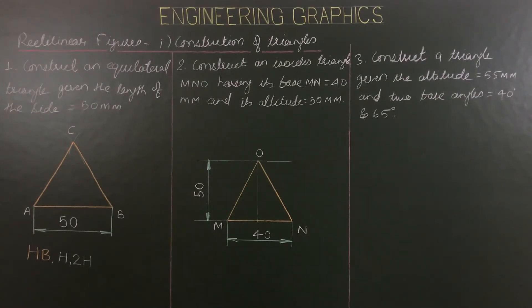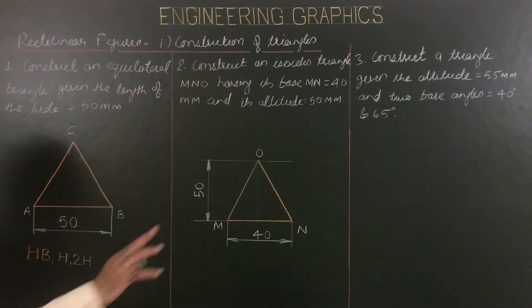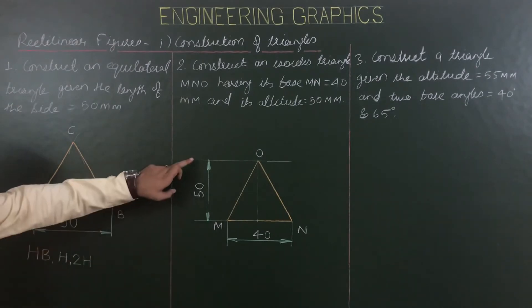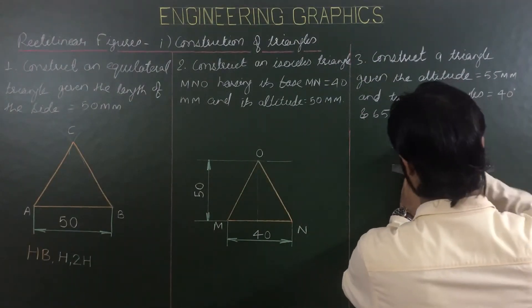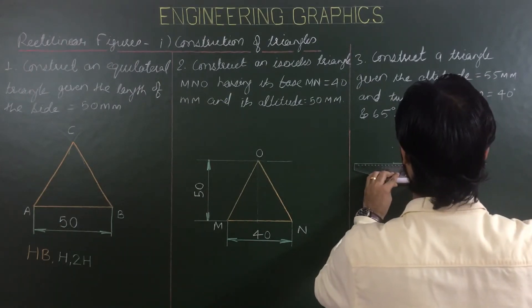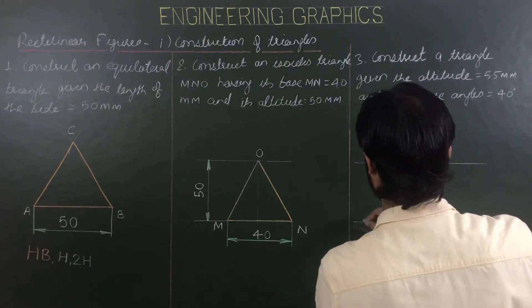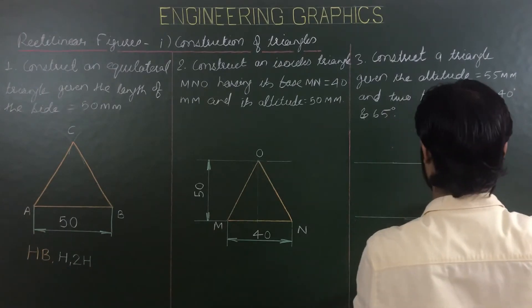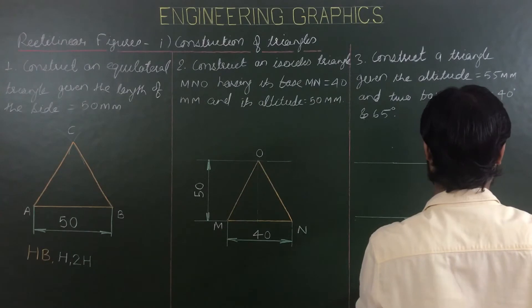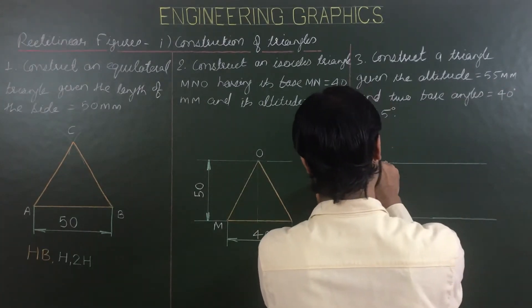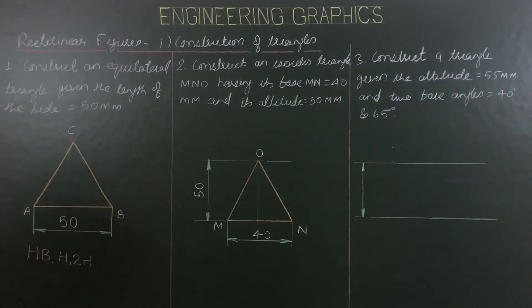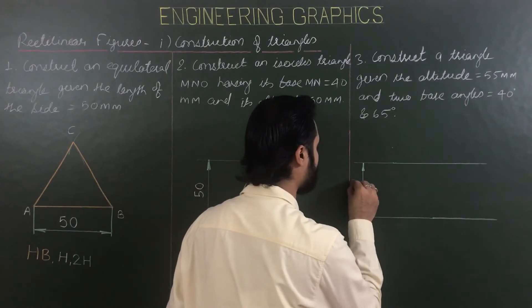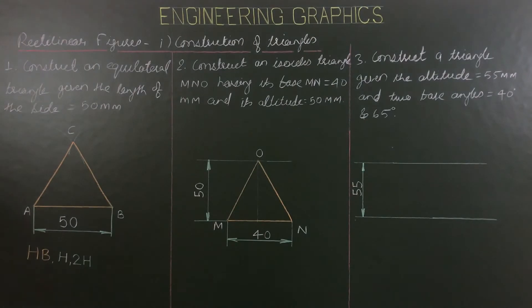Third question: construct a triangle given the altitude equals 55 mm and two base angles of 40 degrees and 65 degrees. For this question, since the altitude is 55 mm, draw two lines parallel to each other at a distance of 55 mm. Draw two parallel lines with a gap of 55 mm between them. Properly dimension this height or altitude as 55 mm.